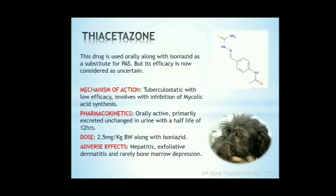Next is thiacetazone. It is an orally used drug used along with isoniazid as a substitute for para-aminosalicylic acid. Its efficacy in TB is now considered uncertain. The mechanism is tuberculostatic with low efficacy, involving inhibition of mycolic acid. It is an orally active drug primarily excreted unchanged in urine. Half-life is 12 hours. Dose: 2.5 mg/kg. Adverse effects include hepatitis, exfoliative dermatitis, and rarely bone marrow depression.